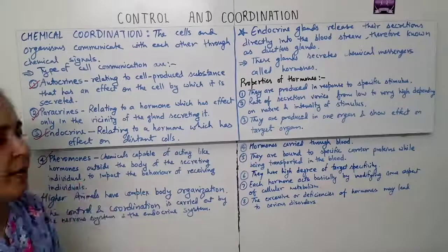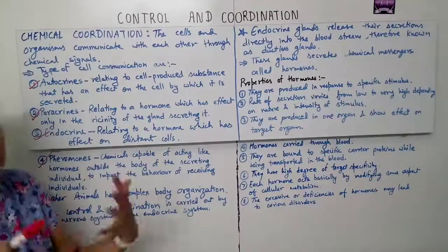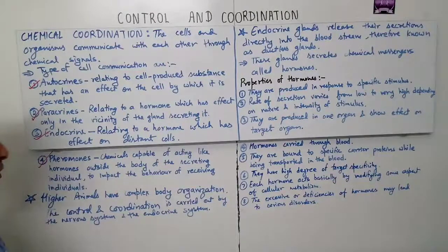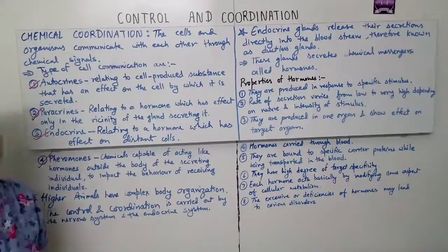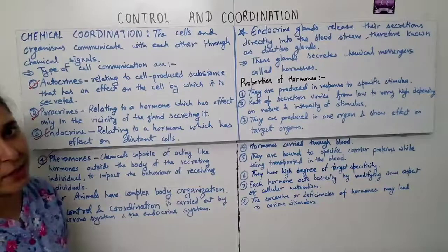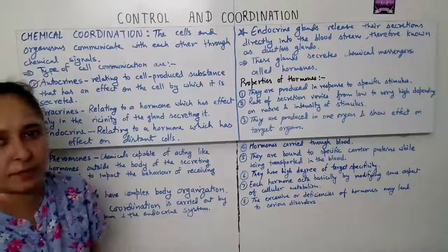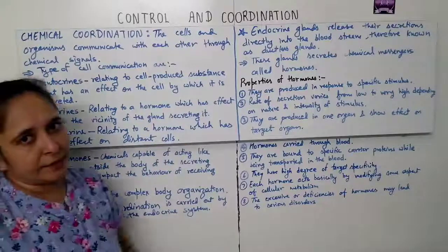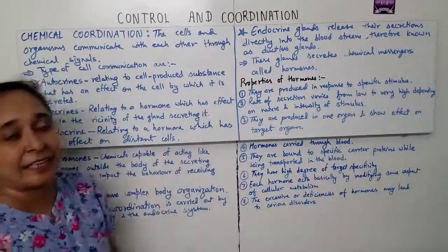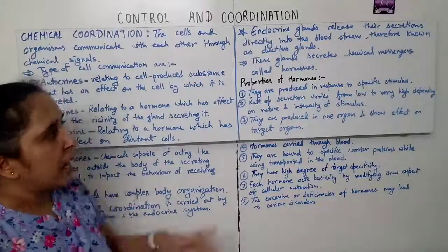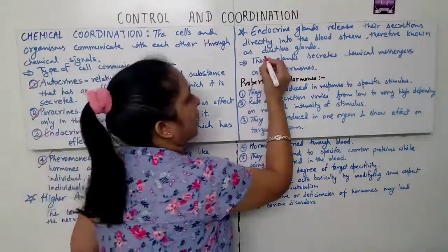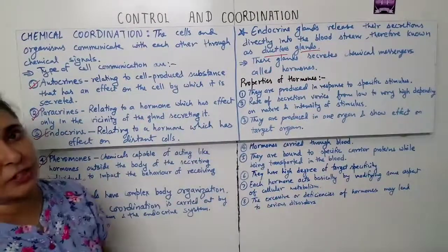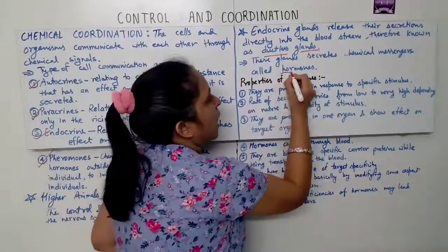In the case of higher animals they have complex body organization. Here the control and coordination is carried out by the nervous system and the endocrine system together. Endocrine glands secrete their secretion directly into the bloodstream, and that's why they are called ductless glands. These glands secrete chemical messengers called hormones.